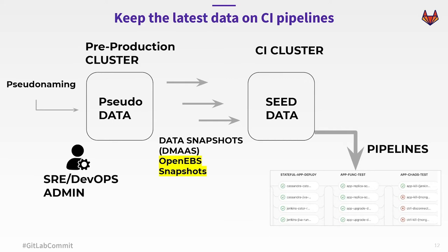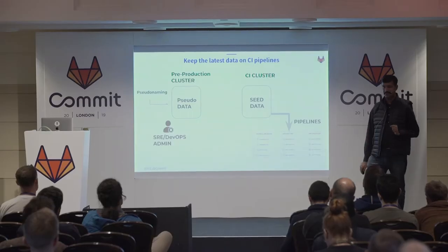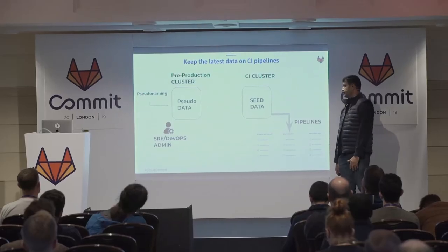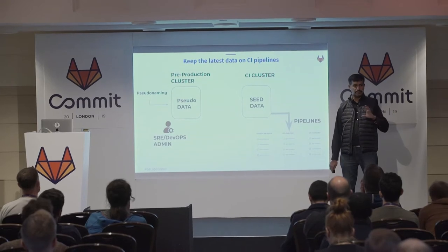I was talking to Sid yesterday during dinner and he gave this name. The data gets massaged from pre-prod or prod to pre-prod — he said there is a name for it: it's called pseudonymizing. The idea of pseudonymizing is you take your production data but your customers are not going to allow you to use it directly, so you replace all the personal data with some dummy data. That's a good practice followed in a standard way by all DevOps teams.